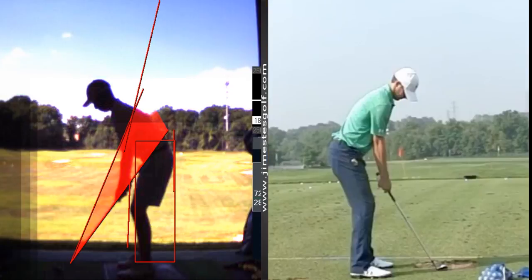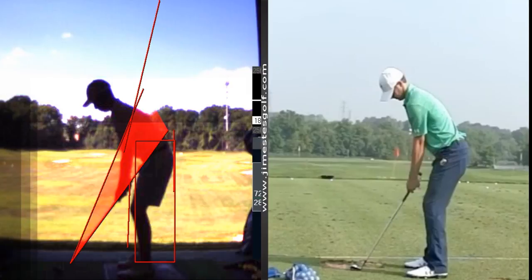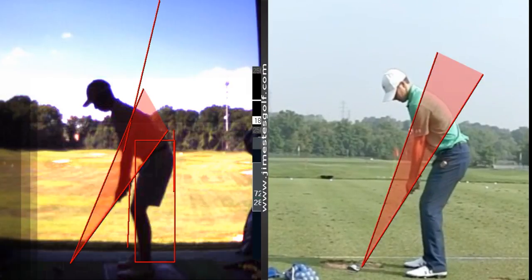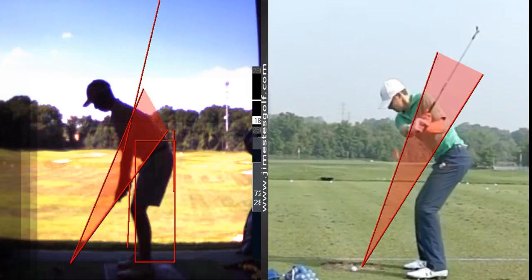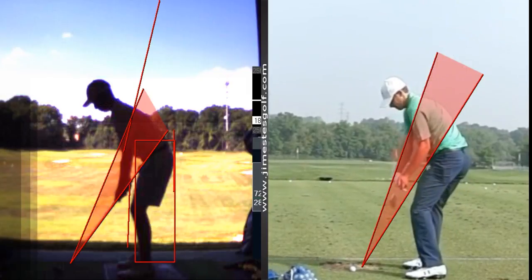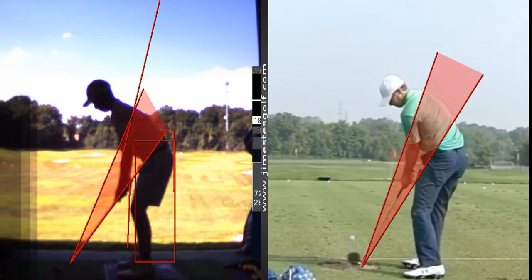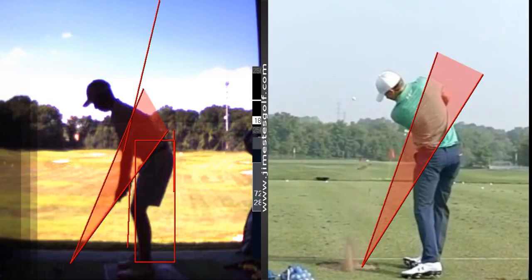Alright, so the reason Spieth is such a good short iron player is he keeps the handle in, clips it out on takeaway, keeps the club in front of him here. The trail heel is on the ground at impact. And then post-impact, the trail heel is still on the ground, and it comes up right there—it starts to come up.